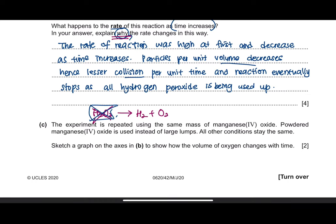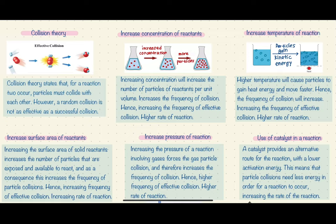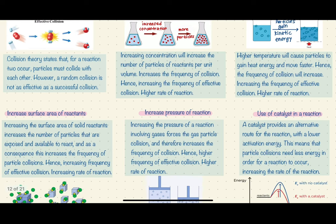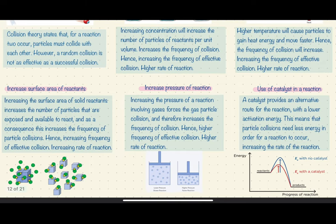Question C: the experiment is repeated using the same mass of manganese oxide, but powdered manganese oxide is used instead of large lumps, with all other conditions the same. Sketch a graph to show how the volume of oxygen changes with time. There are six factors that affect the rate of reaction. Using a powdered catalyst instead of large lumps means you are increasing the surface area of your catalyst or reactant.